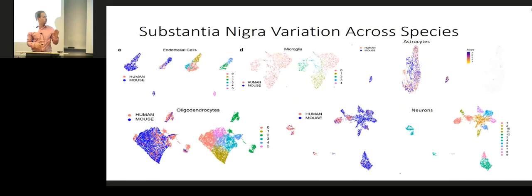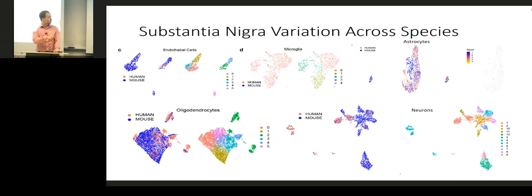We were also able to map substantia nigra cells from human to mouse to identify corresponding cell types. We hoped to find human-specific cell types but didn't. We did find some mouse-specific cell types, but they turned out to be related to anatomical and dissection differences — for example, a subtype of astrocytes that is only located in a certain part of the brain much closer to the substantia nigra in mouse than in human. The cross-species analysis essentially showed that cell types are quite similar between mouse and human.